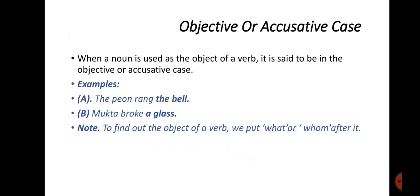Objective or accusative case. When a noun is used as the object of a verb, it is said to be in the objective or accusative case. Example: 'The peon rang the bell.' 'Mukta broke a glass.' Here, the bell and a glass are objects of the verbs 'rang' and 'broke'.